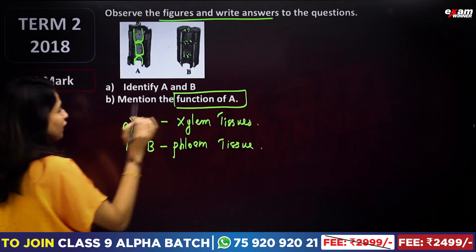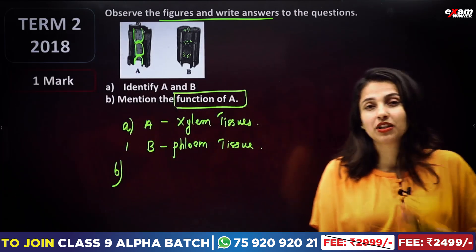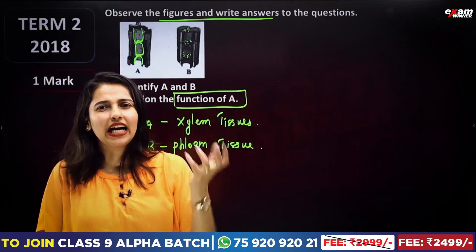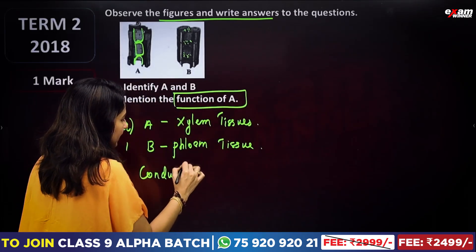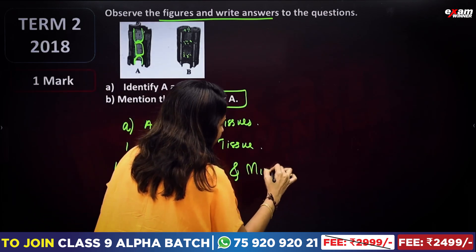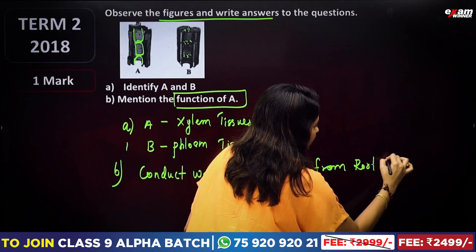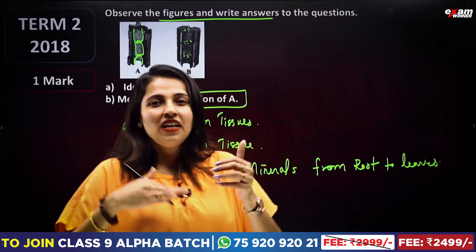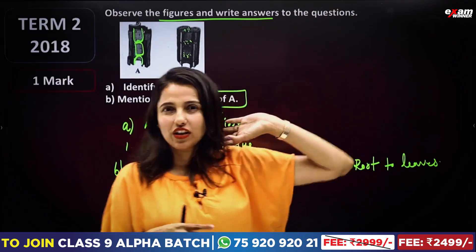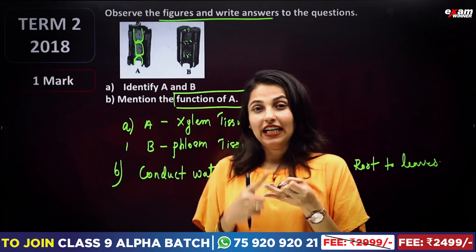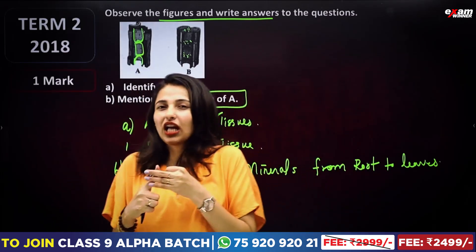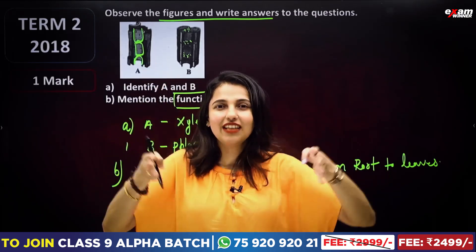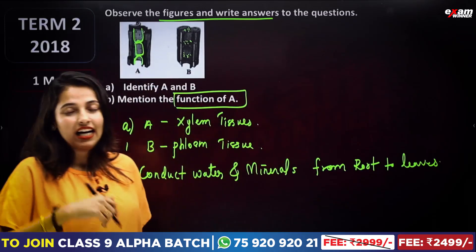What do we need to mention? You mentioned the function of A — what is A? A is called xylem tissues. What is the function of xylem tissues? It conducts water and minerals from root to leaves. The xylem tissues are used to force mineralized water to the top of the tree. The forces involved are: transpiration, root pressure, and cohesion and adhesion — water molecules have more attraction to each other and to the vessel walls.